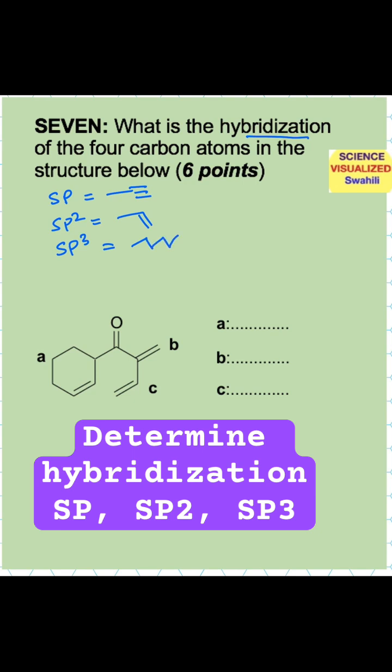So what's the hybridization of the four carbons? If you look at carbon number A, that's this carbon, it does not have any double bond or triple bond, and therefore it's going to be an SP3 carbon.